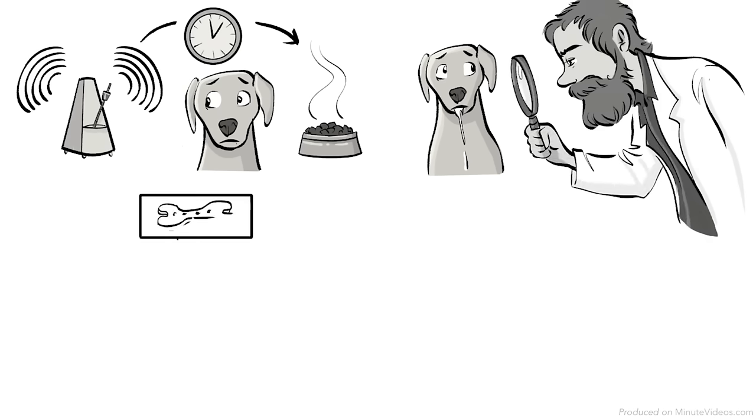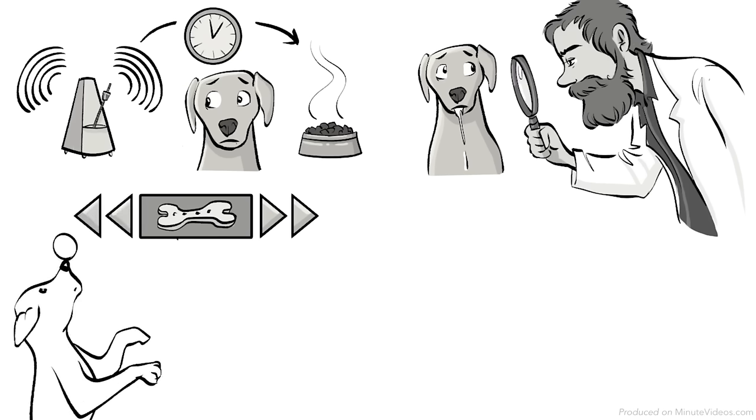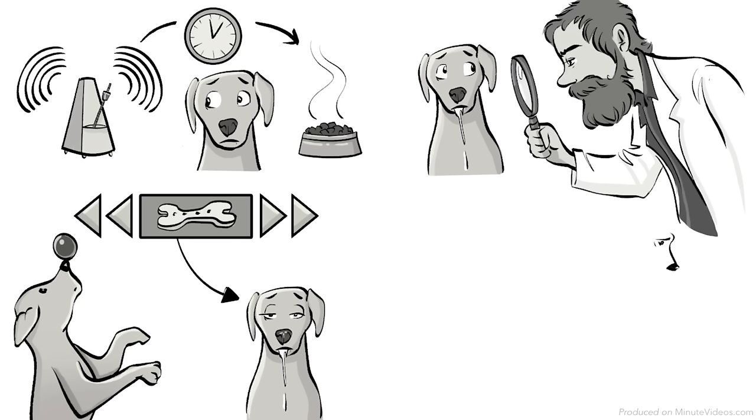Three, while there are several forms of conditioning, such as forward and backward conditioning, classical conditioning cannot create new behavior or be used for training, but instead triggers involuntary biological responses.